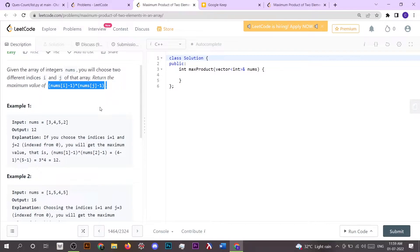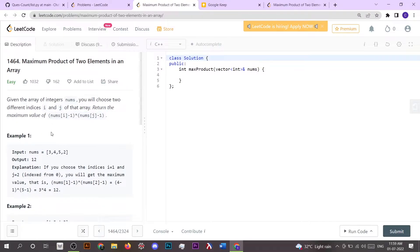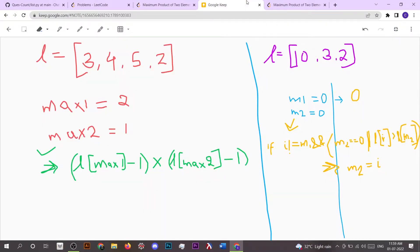The second approach could be: if we have given a list L, we can find the first maximum number and the second maximum number. The first maximum number is at index 2 which is 5, and the second maximum number is 4 which is at index 1. If we find both of these indexes, we can simply return the answer.